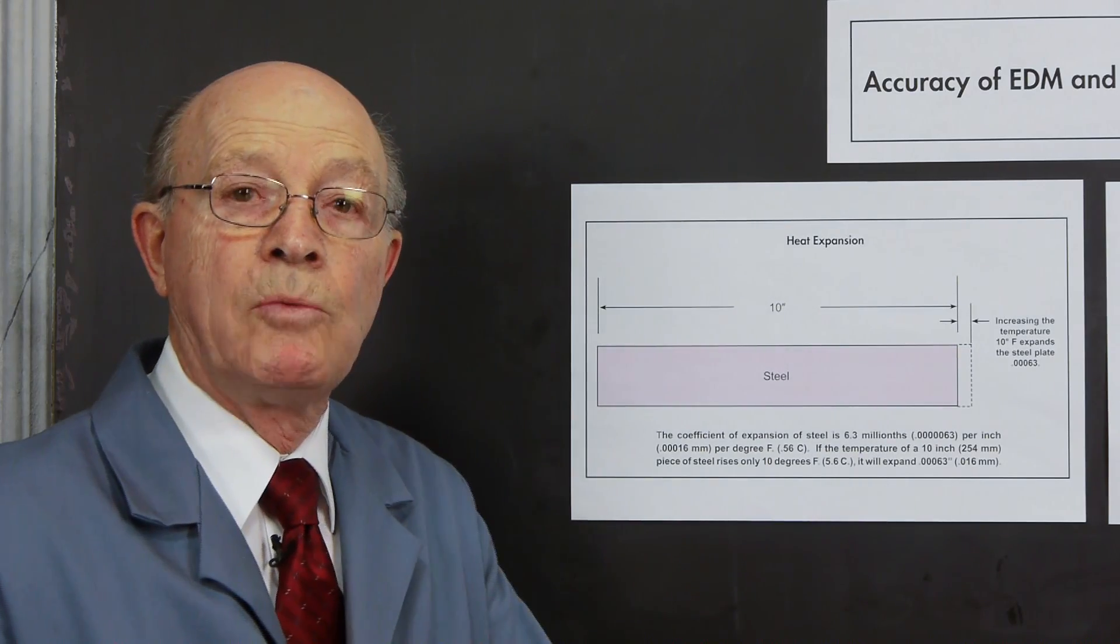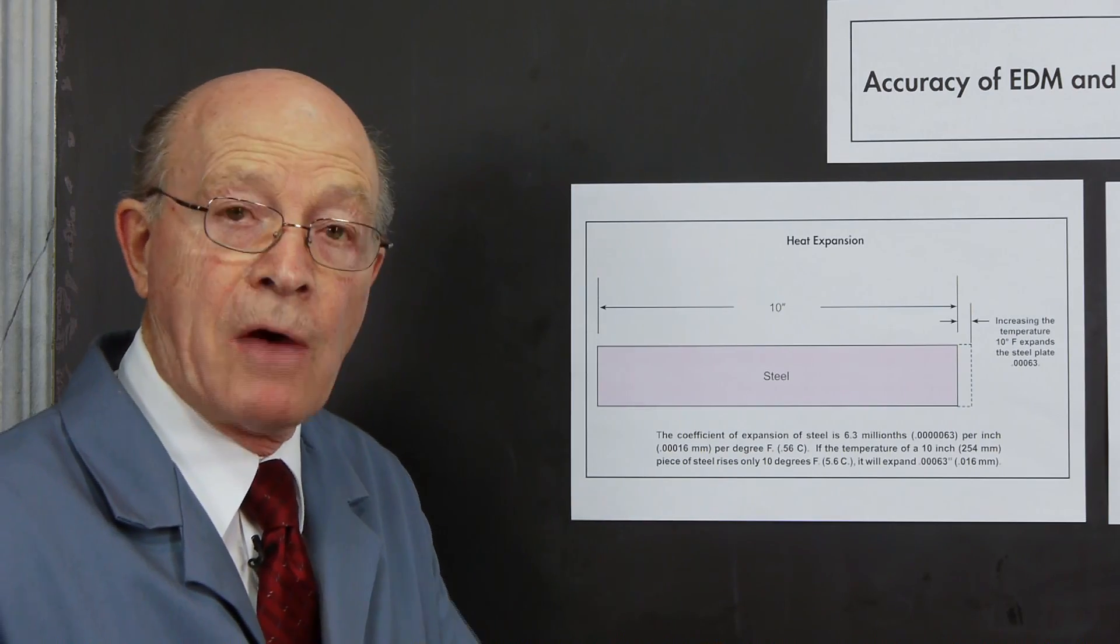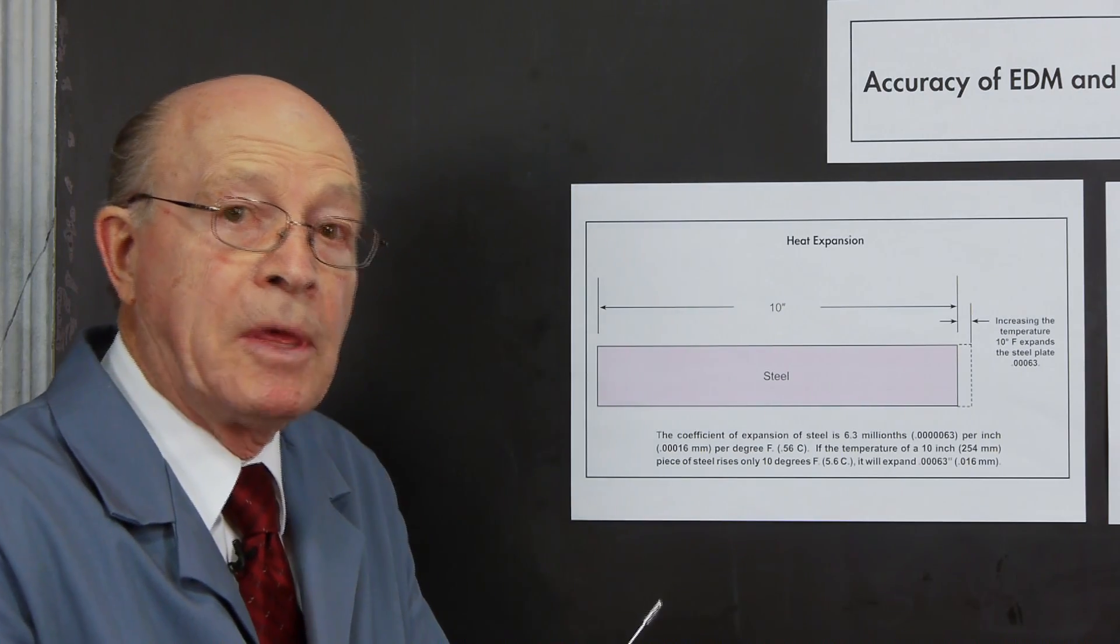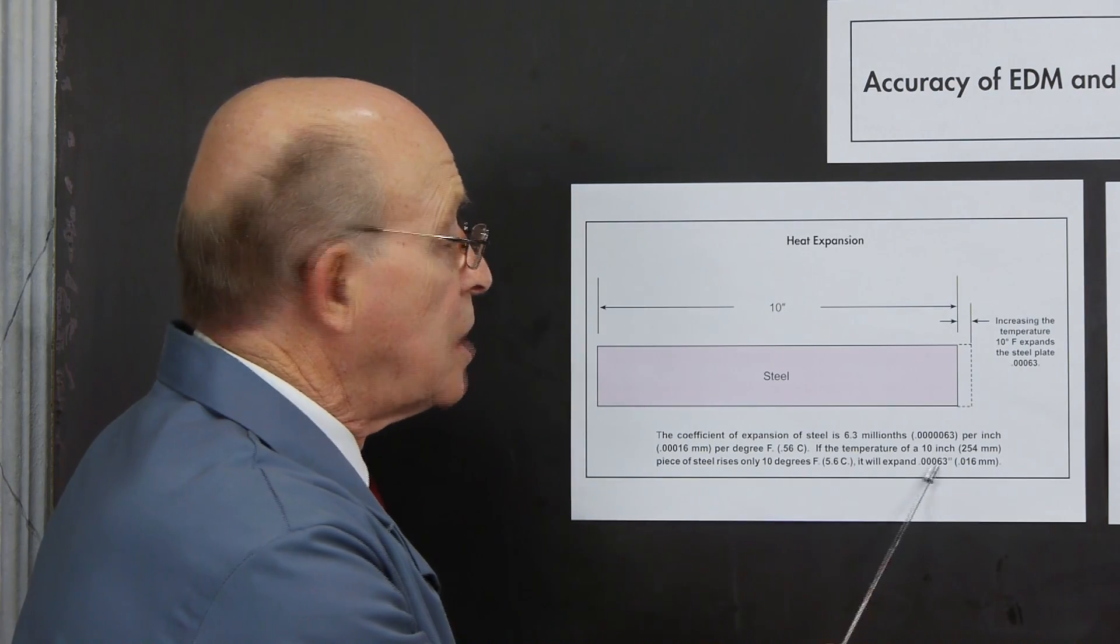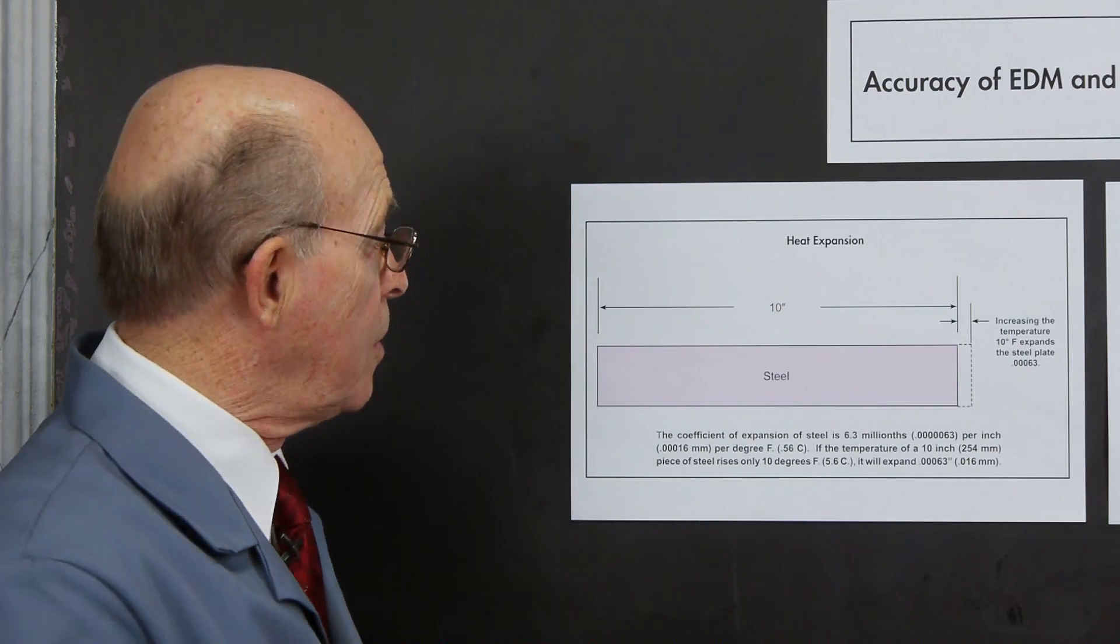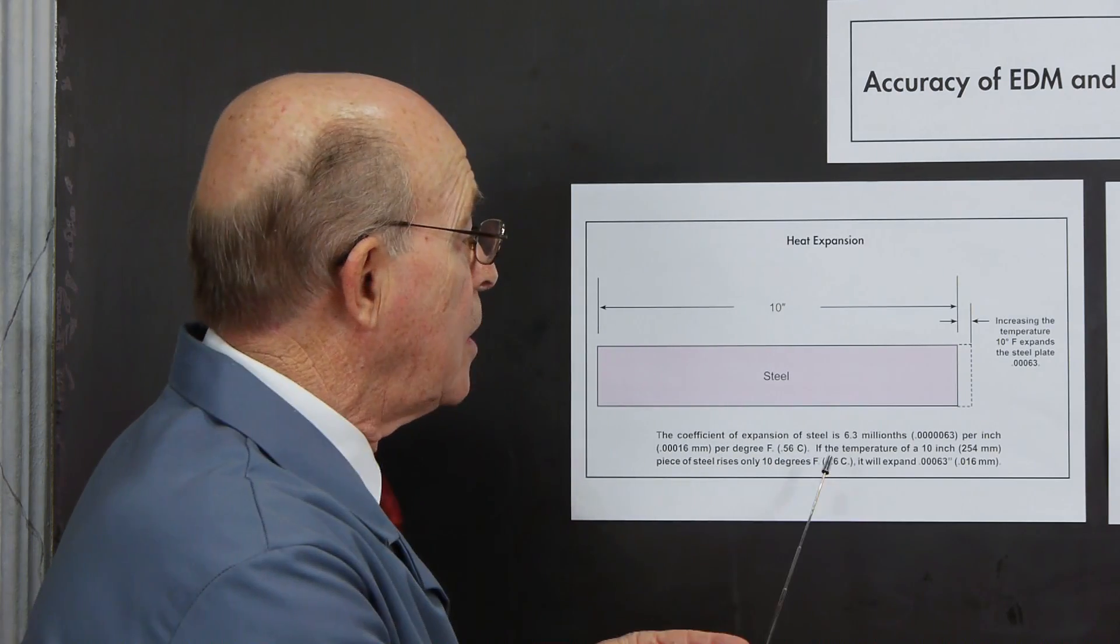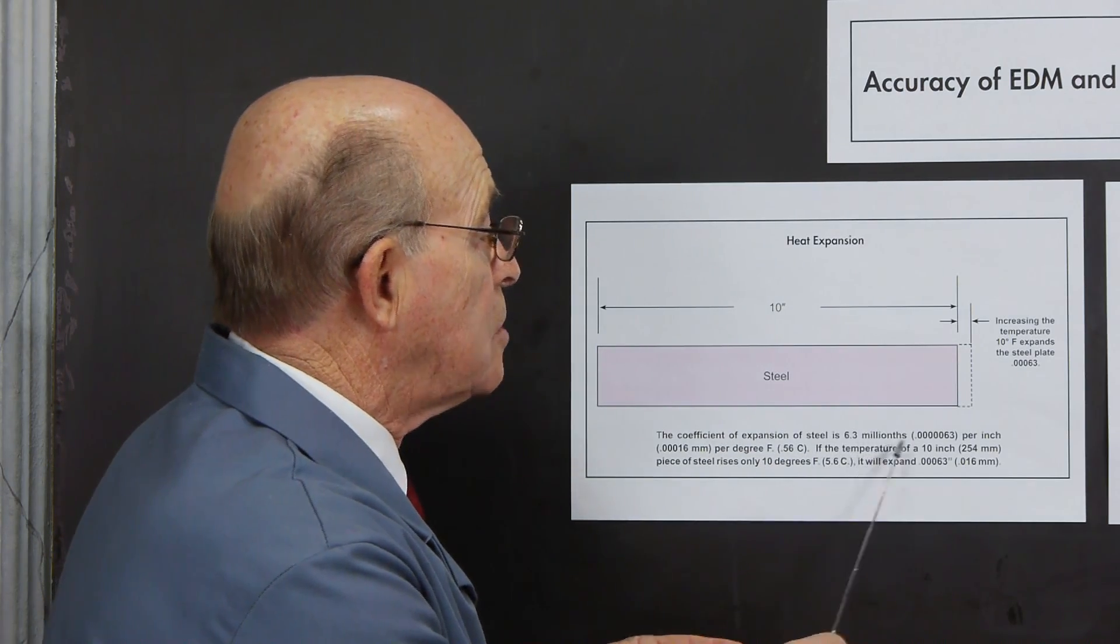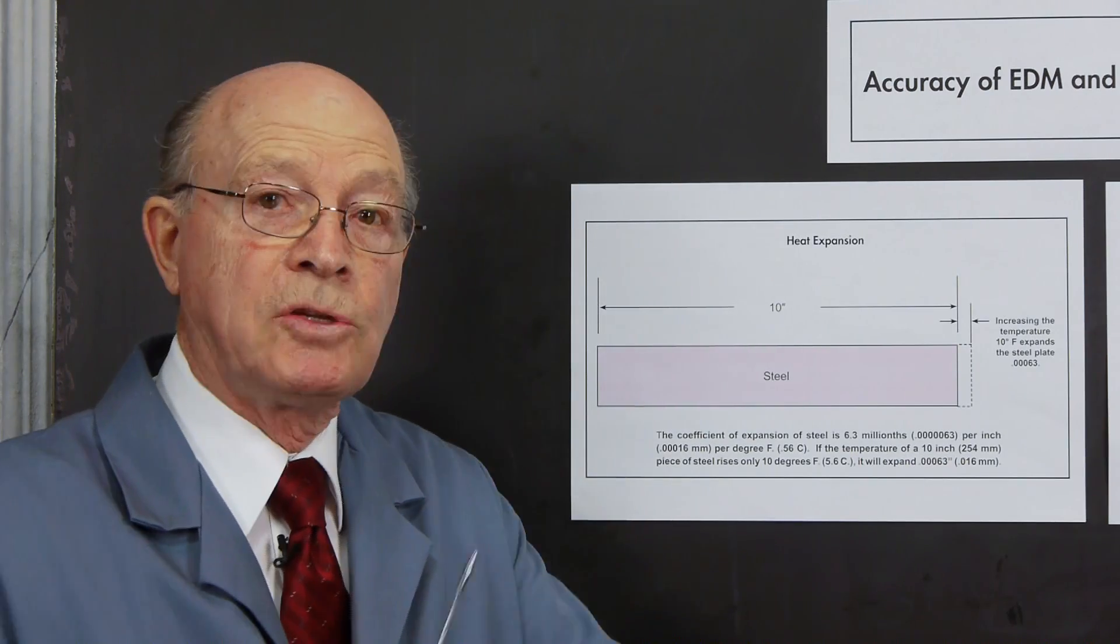If you had a part that measured 10 inches long, and it had to be within five-tenths of a thousand, and for somehow, just by handling it, it became 10 degrees warmer, it would expand to six-tenths. It would be out of tolerance. And notice also, this is the coefficient of expansion of steel is 6.3 millions per inch. Different metals have different expansion rates.